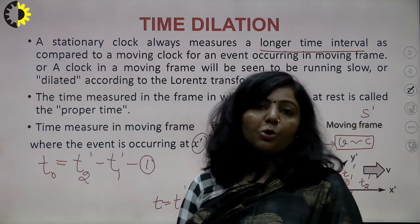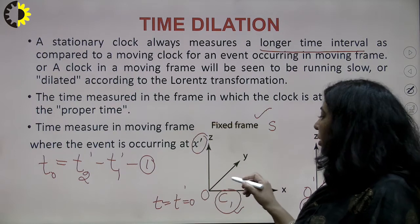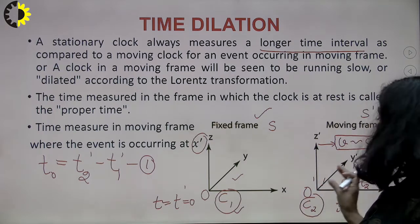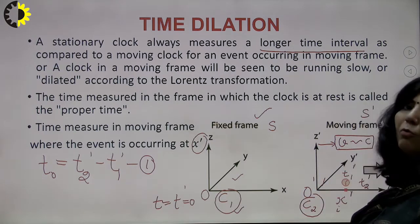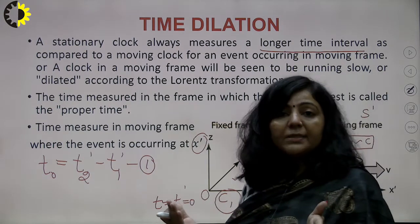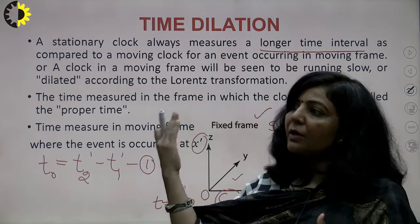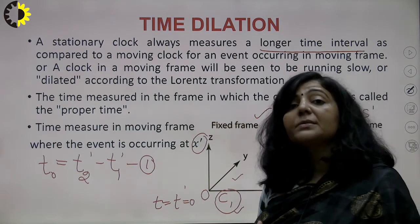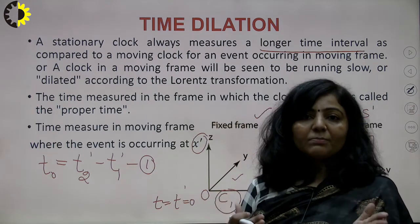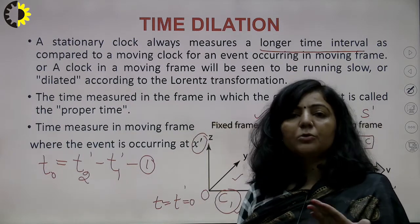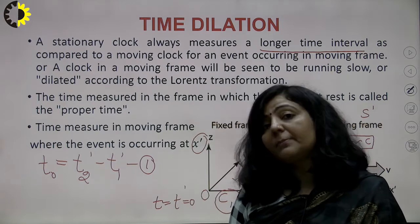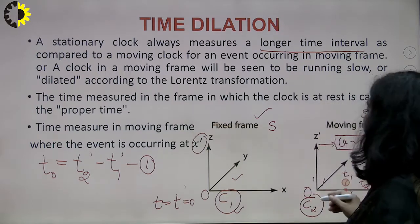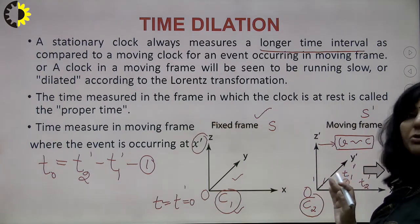According to the time dilation concept, a stationary clock measures a longer time interval compared to the moving clock when the event occurs in the moving frame. So if one observer is stationary and the other is moving, and both observe the same event, the time intervals they measure are not the same. Stationary clock C1 measures a longer time interval T compared to T-naught measured by clock C2.